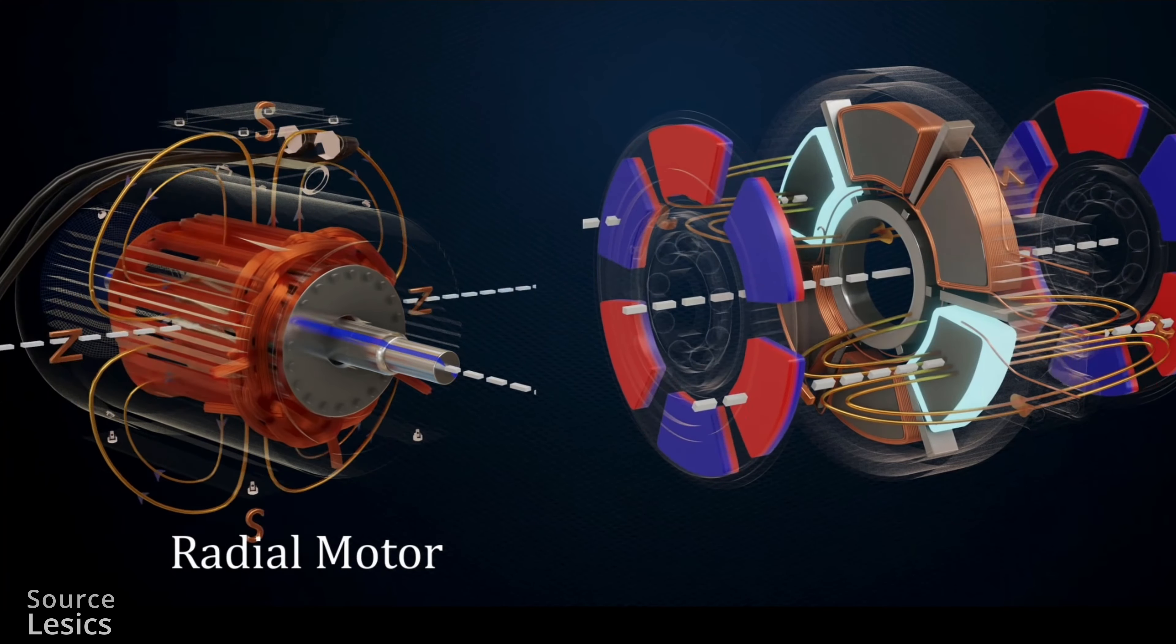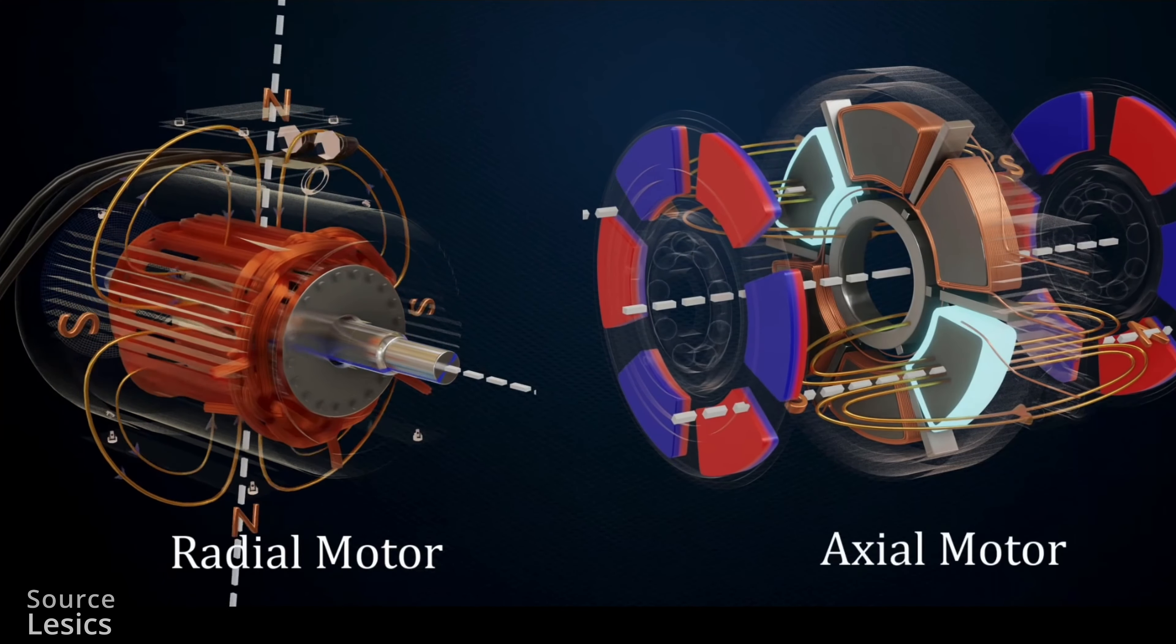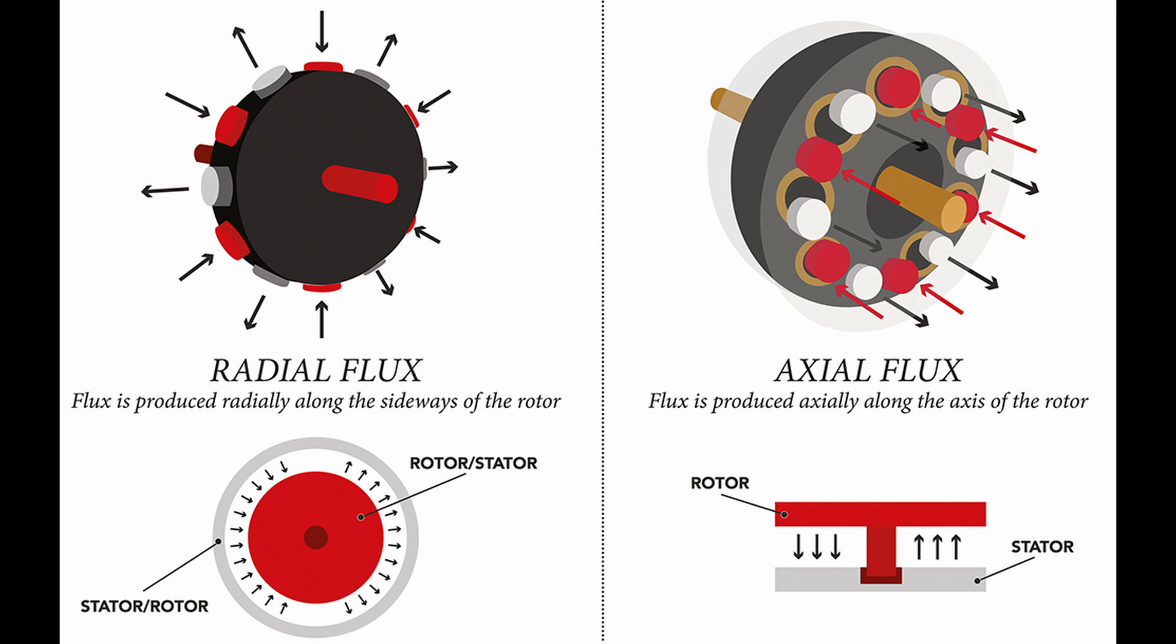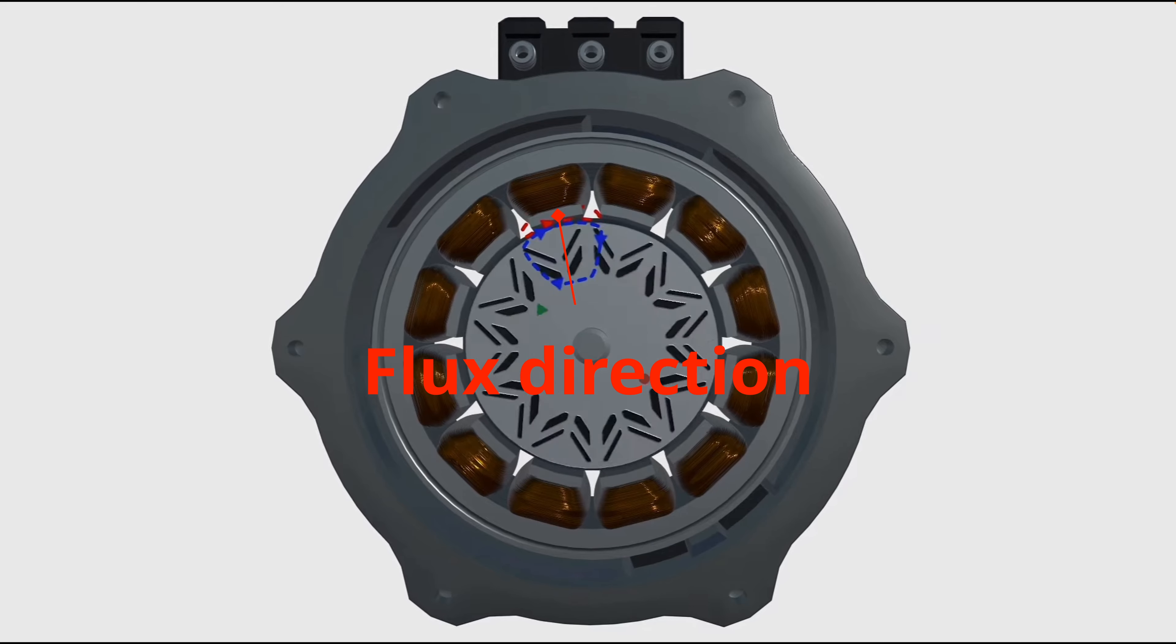How does axial flux motor work? What is the difference between conventional radial flux motor and axial flux motor? The main difference is direction of magnetic flux.